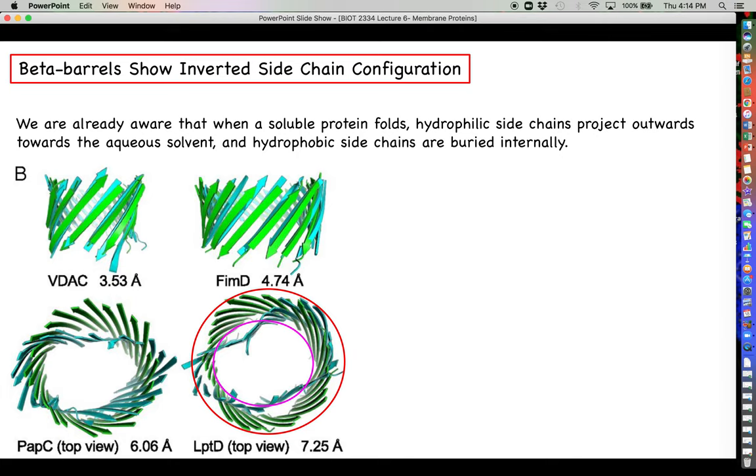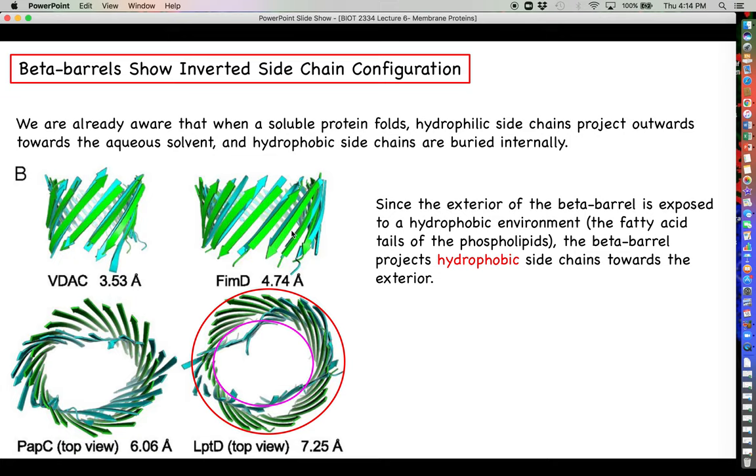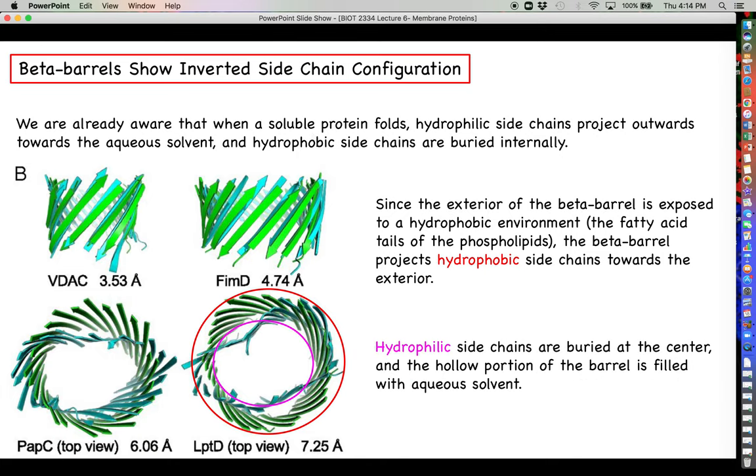Beta barrels show an inverted configuration compared to what we're used to. Since the exterior of the beta barrel, what I've highlighted here with this red circle, is exposed to a hydrophobic environment instead of an aqueous environment, we can expect the hydrophobic side chains to be projected outwards towards the exterior. The hydrophilic side chains, what I'm trying to show here with this pink circle, will be buried in the center such that they are exposed towards the hollow portion of the cylinder or the barrel, and that portion is actually filled with aqueous solvent. This provides a continuous channel that connects the extracellular fluid to the intracellular fluid.